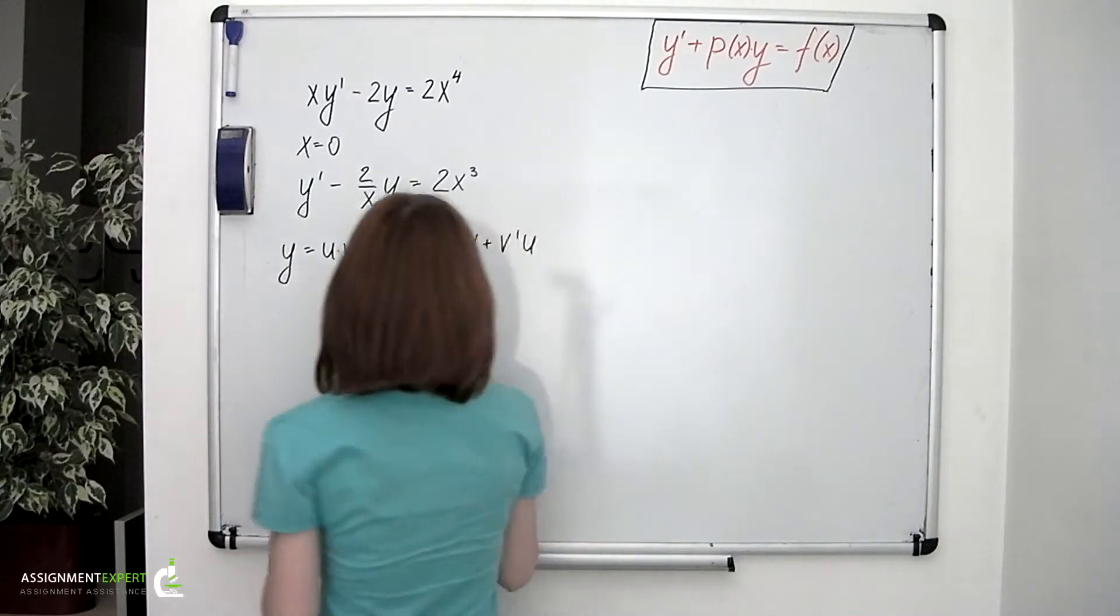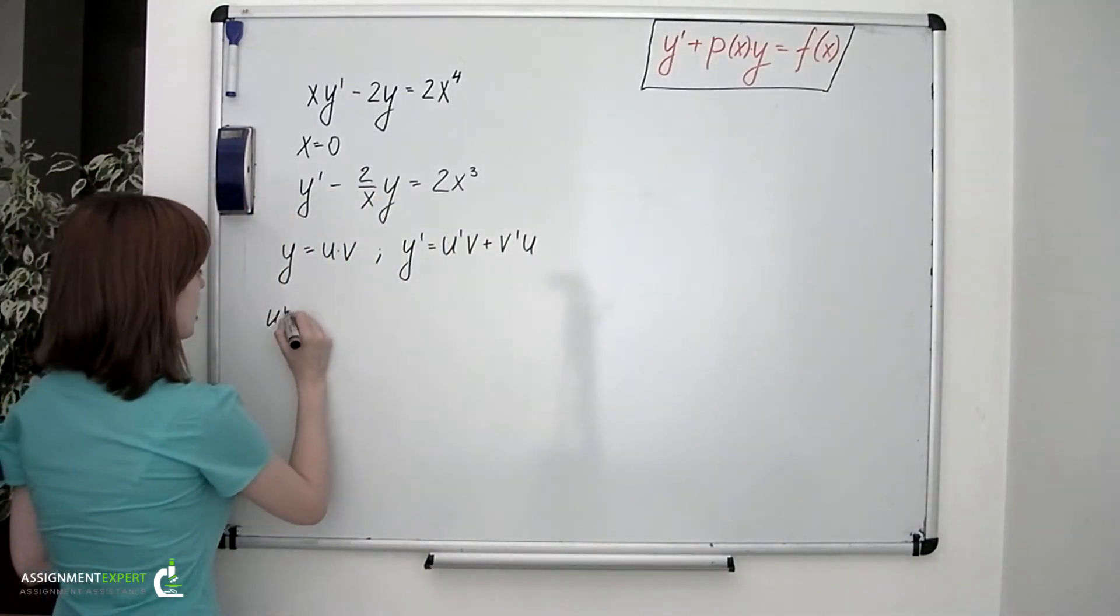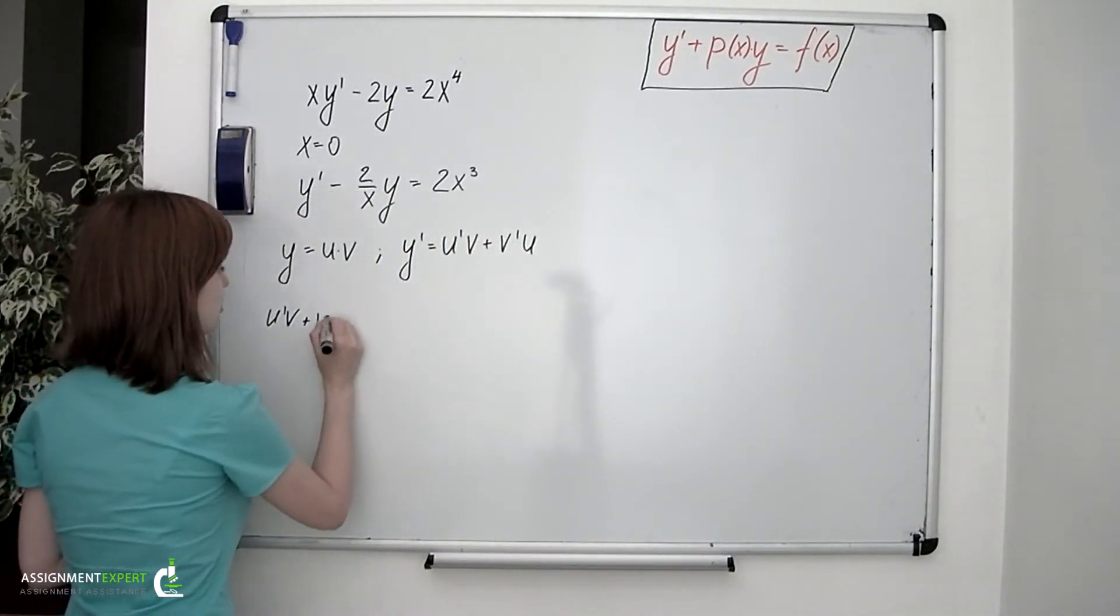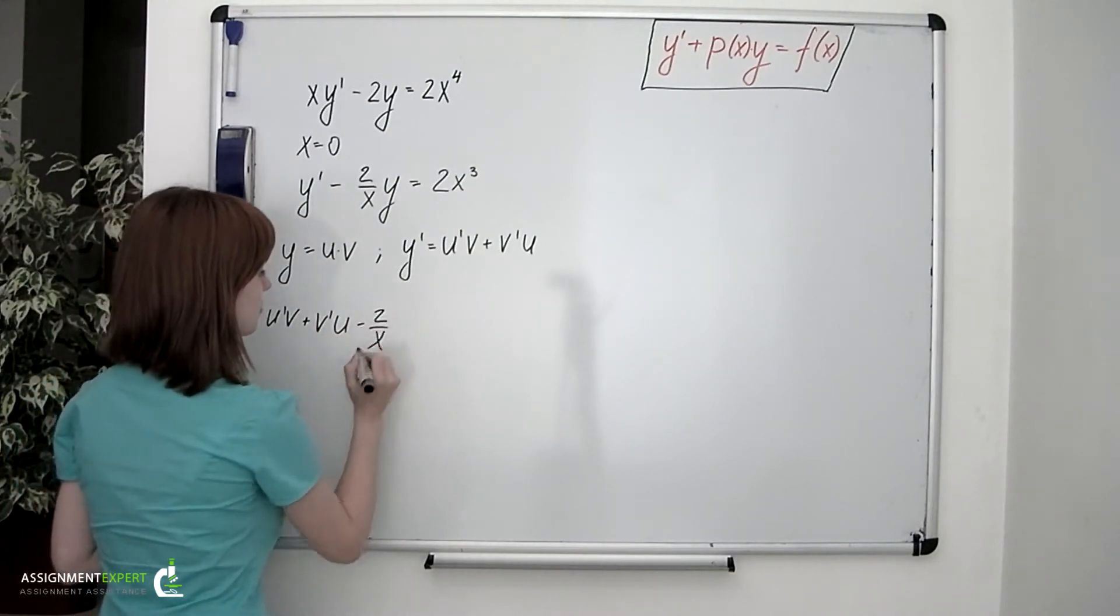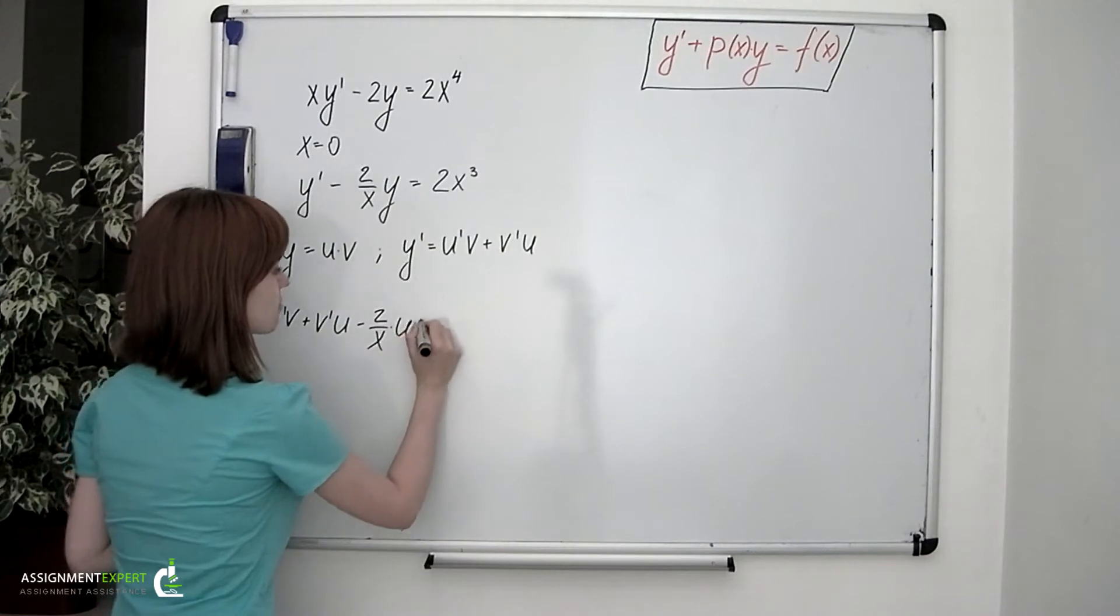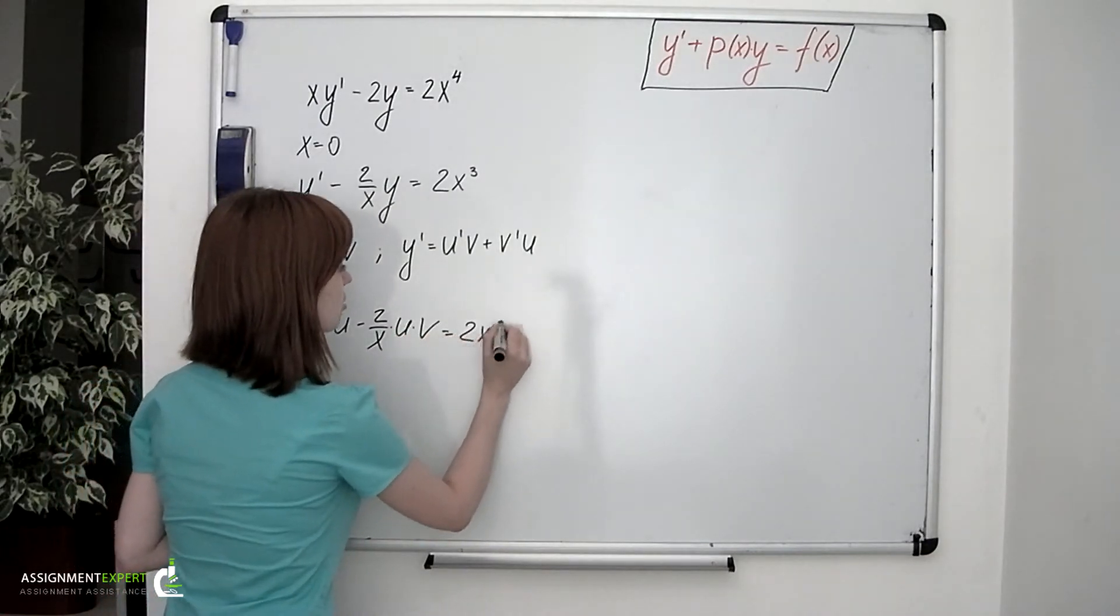So we'll have u prime times v plus v prime times u minus 2 over x times u times v equals 2x cubed.